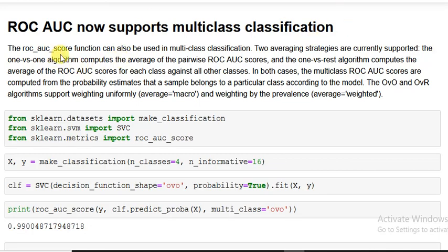Here you see the ROC AUC score function that has been introduced can also be used in multi-class classification. Two averaging strategies are currently supported: the one-versus-one algorithm computes the average of the pairwise ROC AUC scores, and the one-versus-rest algorithm computes the averages of the ROC AUC scores for each class against all other classes.